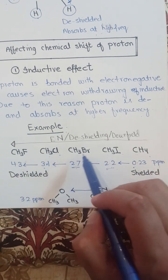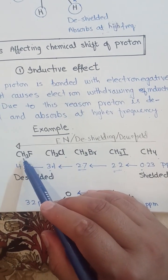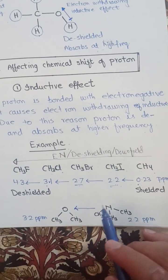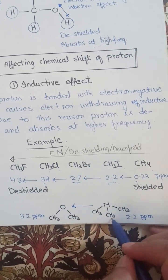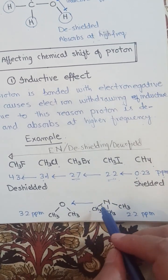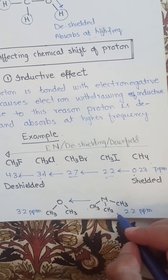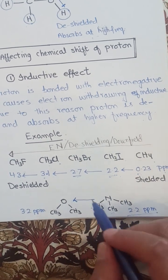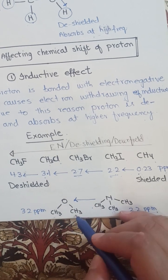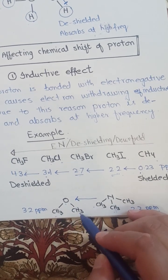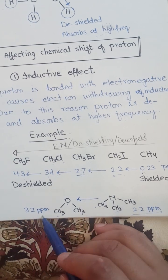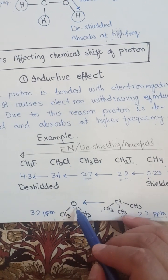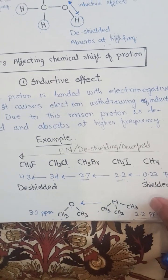Because of electronegative atoms, when electronegativity increases, the deshielding effect also increases. For example, three methyl groups containing nine protons attached with nitrogen provide a signal at 2.2 ppm. When these protons of the methyl group are attached with oxygen in dimethyl ether, these protons will give an NMR peak at 3.2 ppm, which is more towards downfield because of the greater electronegativity of the oxygen atom compared to nitrogen.